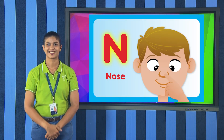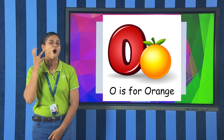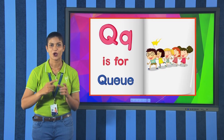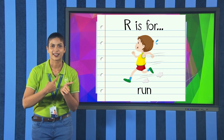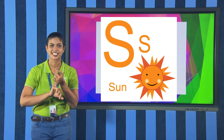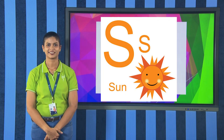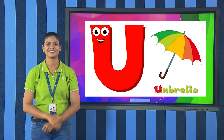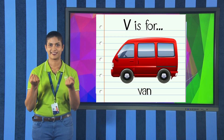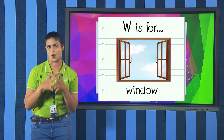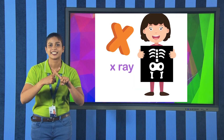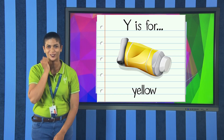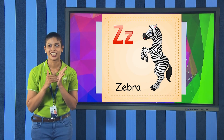N — nose. O — orange. P — pen. Q. R — run. S — sun. T. U — umbrella. V — van. W — window. X — x-ray. Y — yellow. Z — zebra.